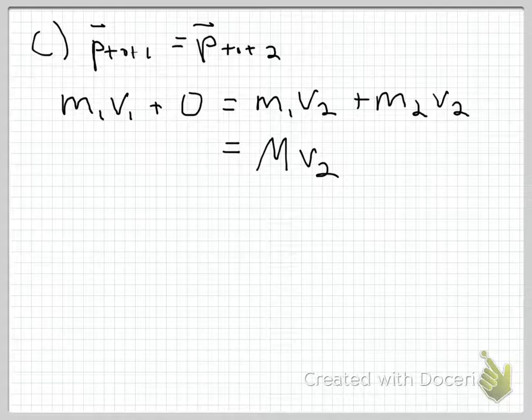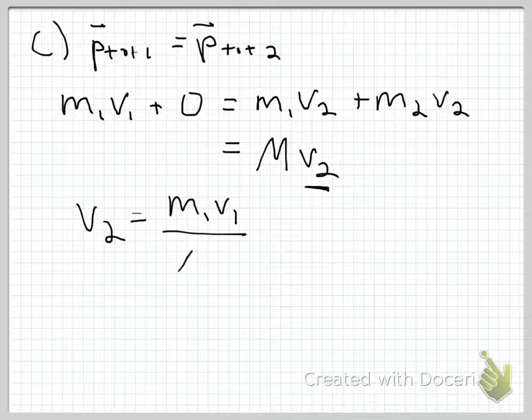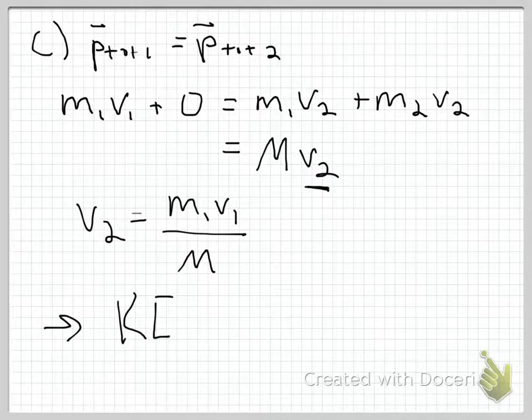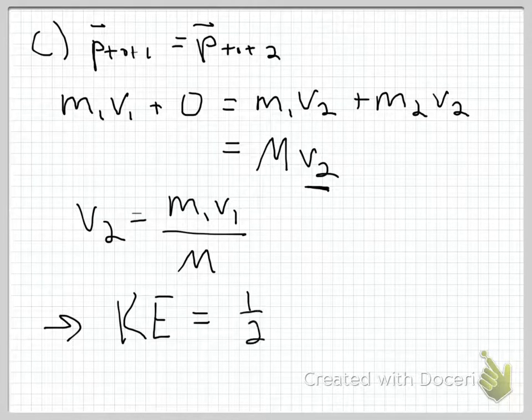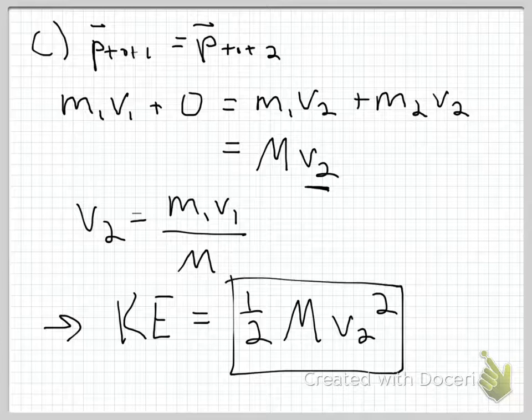At this point, it becomes really easy to find V2, which is what we're looking for. It's just M1 V1, total momentum of the system before the collision, divided by the mass of the bullet and the block combined. So this means that the kinetic energy after the collision is just one half big M V2 squared. We have numbers for all this stuff, we can just plug it in.